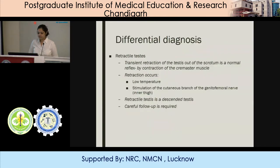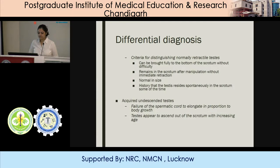Coming to differential diagnosis, retractile testes is a transient condition caused by transient retraction of testes out of the scrotum, which is a normal reflex by contraction of the cremasteric muscle. It occurs due to low temperature and stimulation of the cutaneous branch of the genitofemoral nerve. It is a descended testes and careful follow-up is required. Retractile testes can be brought fully to the bottom of the scrotum without any difficulty and it remains in the scrotum after manipulation without immediate retraction. It is usually normal in size and function, and a history of testes residing in the scrotum is always present.